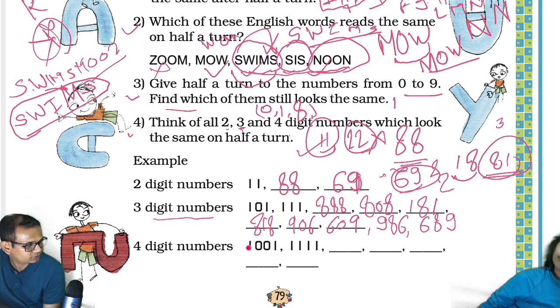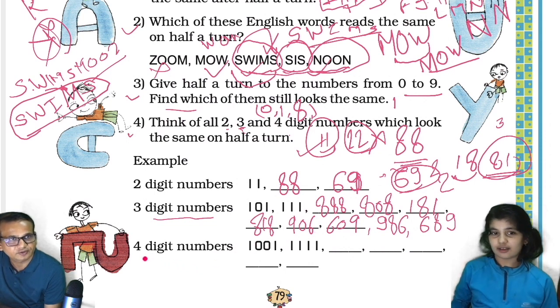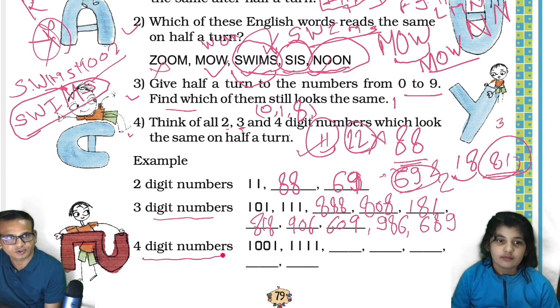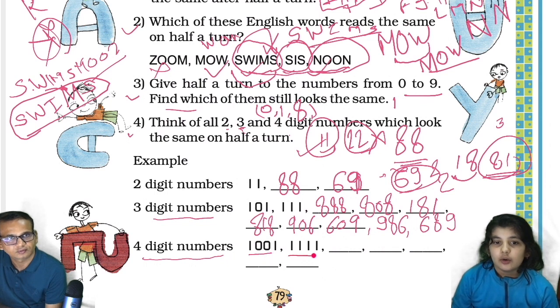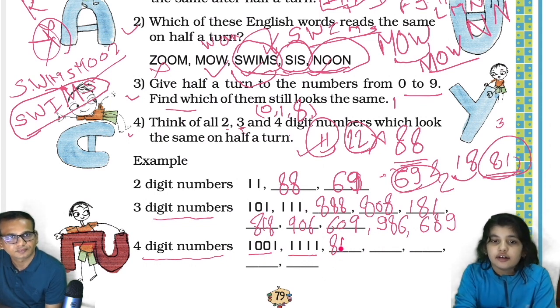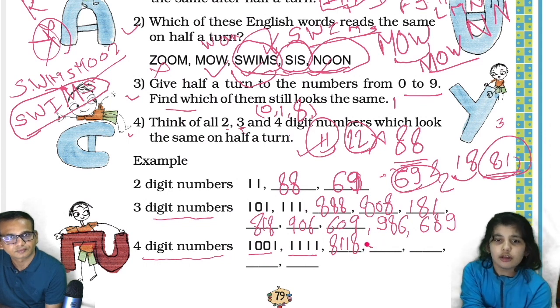Sit properly Avisha. Last one — I'll do this one. Now you do the four digit numbers. One zero zero one — 1001. One one one one — 1111. Eight eight eight eight — 8888.